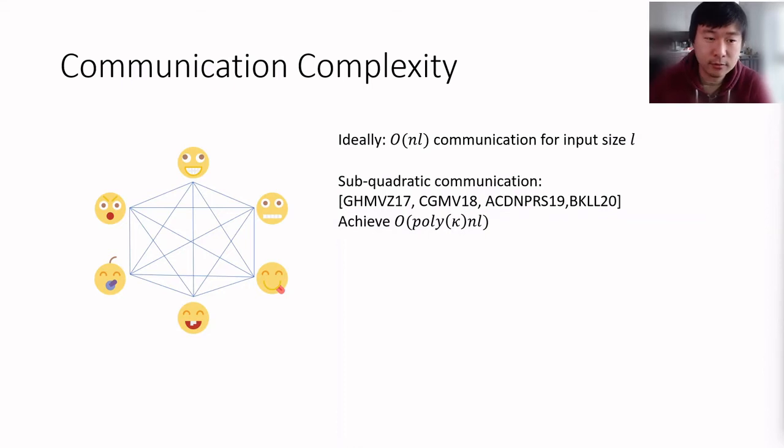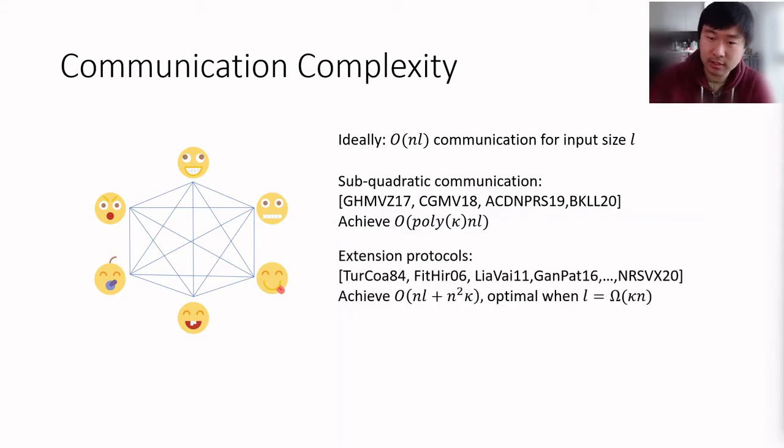But there is another line of works, which is actually like a very traditional line of work starting from the 80s by Turpin and Cohen, which are called extension protocols. And these are protocols that assume like a broadcast or a Byzantine agreement protocol for a short message and it kind of expands it to a protocol for Byzantine agreement for a long message with l bits. And there is a long line of works in this direction.